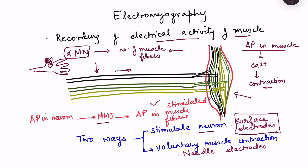On the other hand, we can place needle electrodes within the muscle and ask the person to voluntarily contract the muscle — this is not stimulation of the nerve. That way we can also record action potentials of the muscle fibers. The first method, stimulating the neuron with surface electrodes, we have already seen in nerve conduction velocity where we measure the speed of action potential in the neuron. In this video we will mainly concentrate on recording with needle electrodes inserted within the muscle.